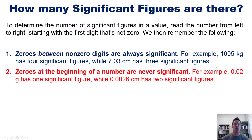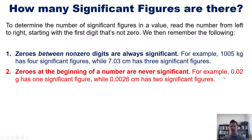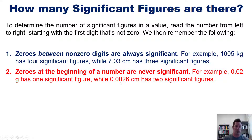Rule two: zeros at the beginning of a number are never significant. For example, 0.02 grams only has one significant figure — only the two counts. The zeros to the left of the two never count. By analogy, 0.0026 centimeters only has two significant figures: the two and the six. All zeros to the left of the non-zero two do not count.